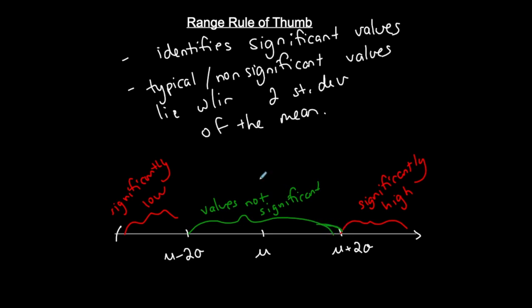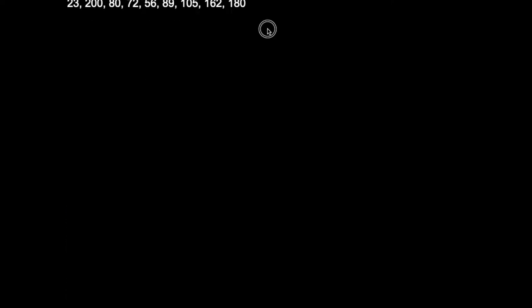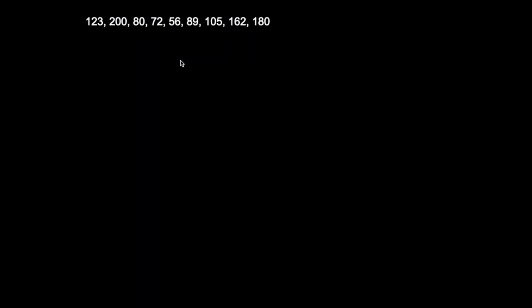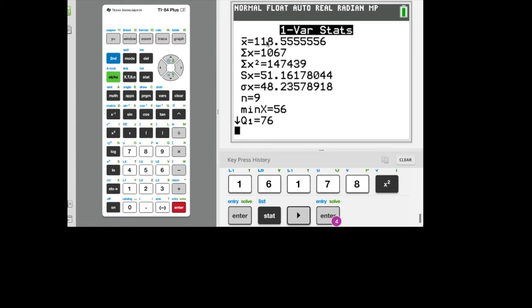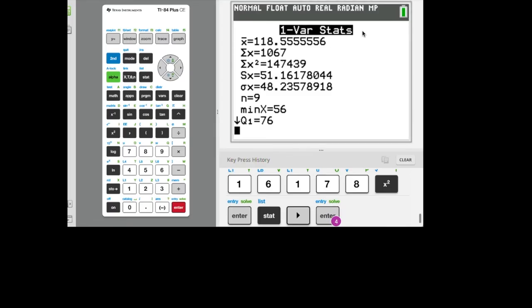Let's use the last set of data I had here. I'm going to take the standard deviation and the mean and use them with the range rule of thumb. The mean was 118.6, and since this was a sample, I'll use the sample mean (x-bar) and the sample standard deviation (S), which was 51.2.